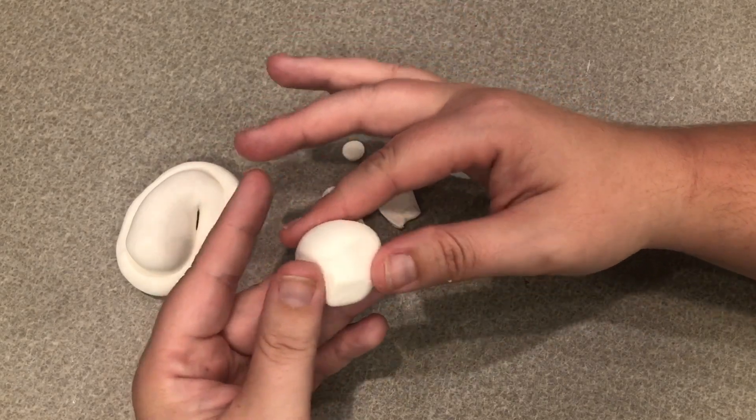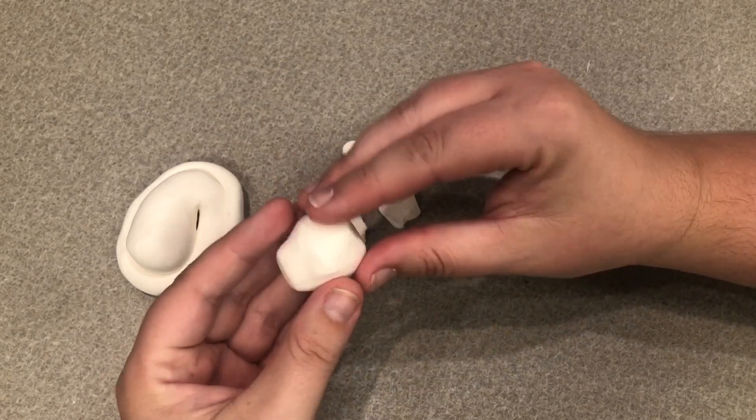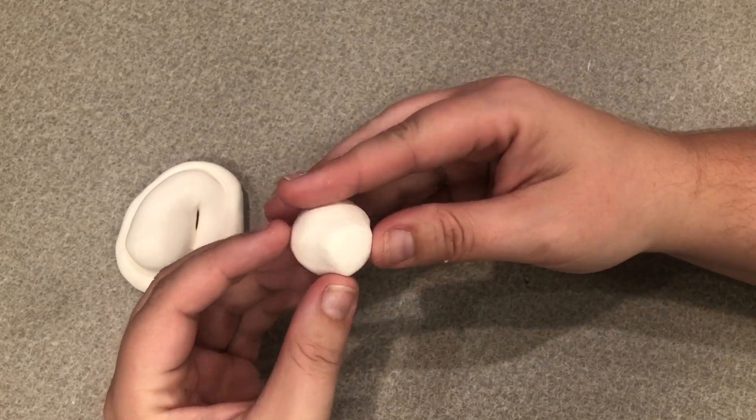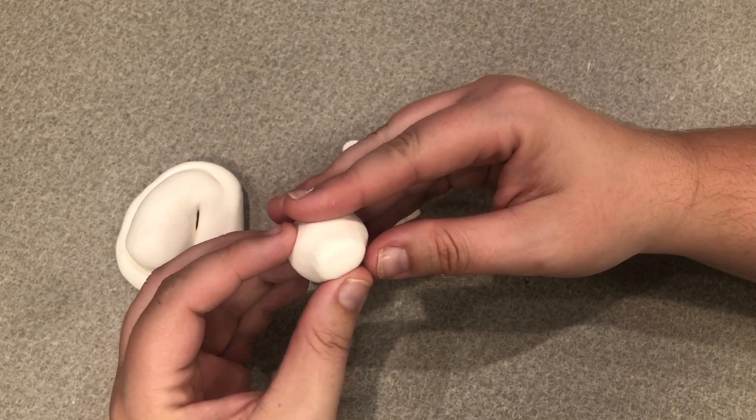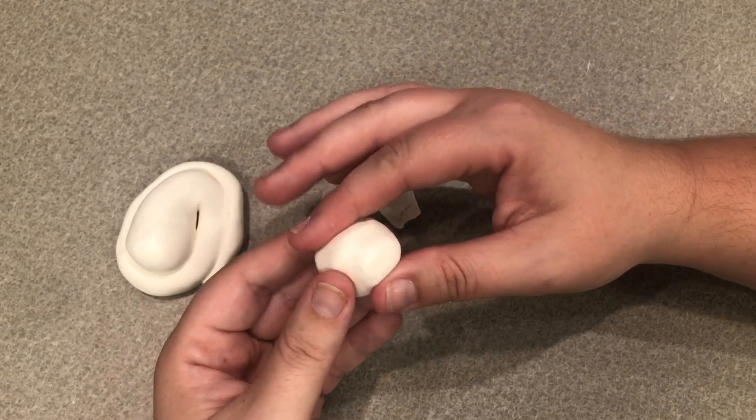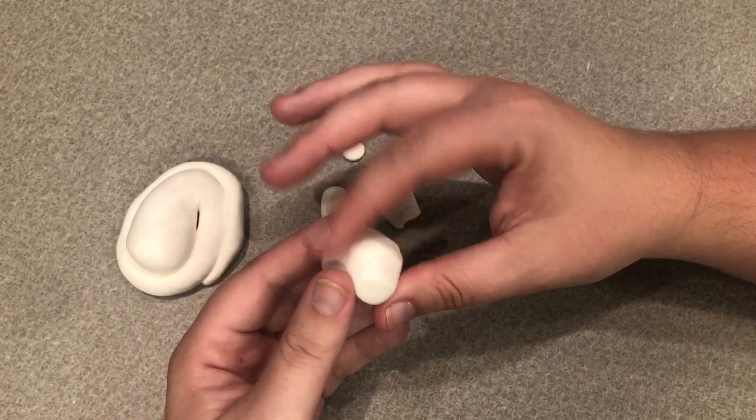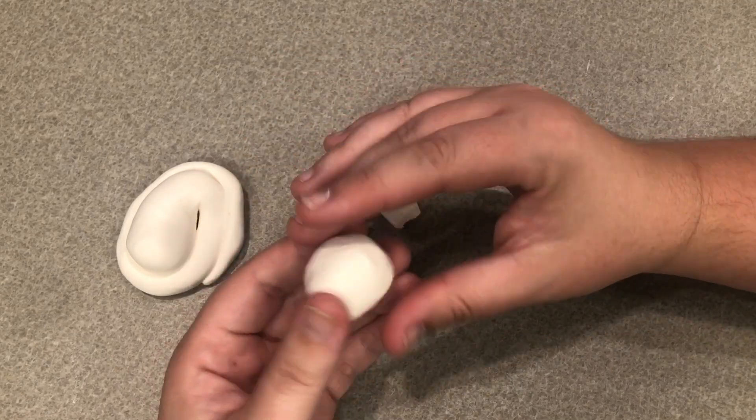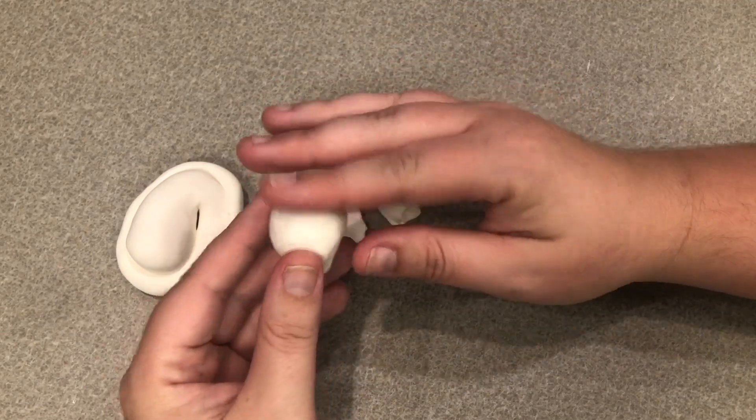His little snout sticks out a little bit but not a whole bunch. So we'll just kind of shape that up to make a little snout and the rest of his head.